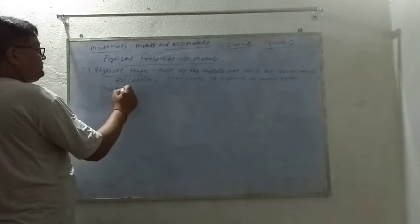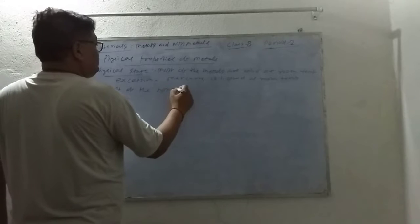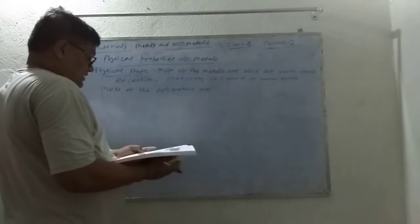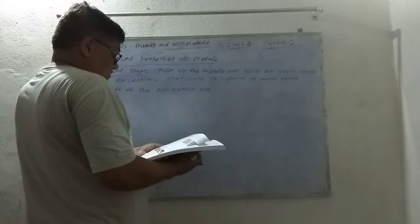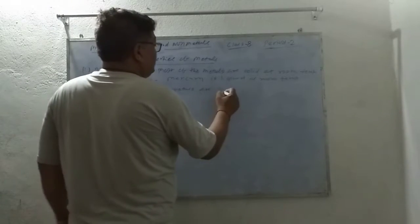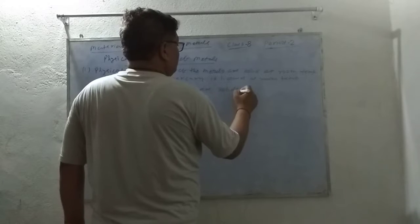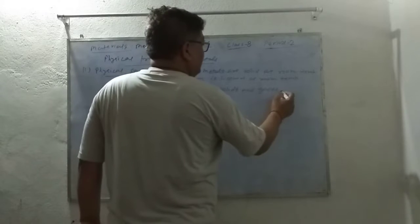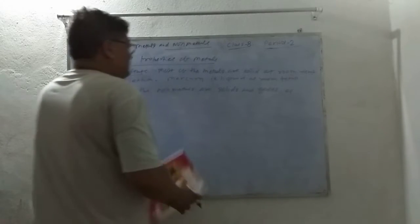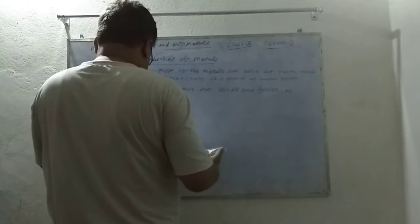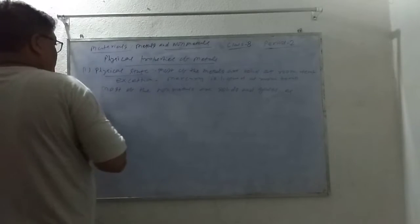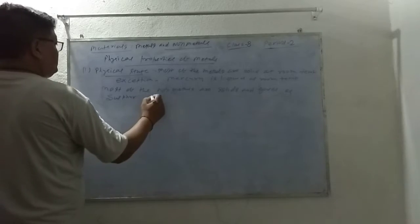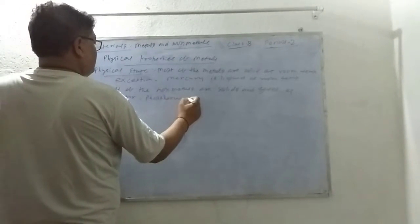Most of the non-metals are gaseous, solid, or gas. These are solids and gaseous forms. For example, we will talk about sulfur and phosphorus as examples of non-metals.